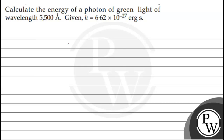Let's read the question: calculate the energy of a photon of green light of wavelength 5500 angstrom, given h is equal to 6.62 into 10 to the power minus 27 erg second. The question is saying that the energy of a photon of green light has wavelength 5500 angstrom and Planck's constant is given in erg units.